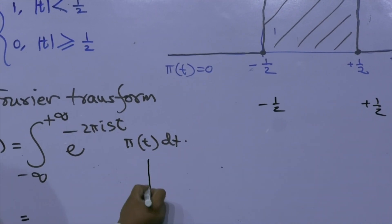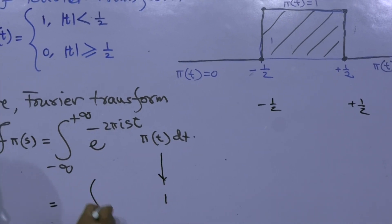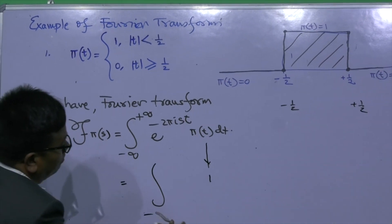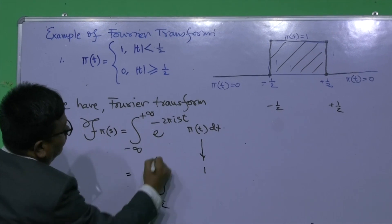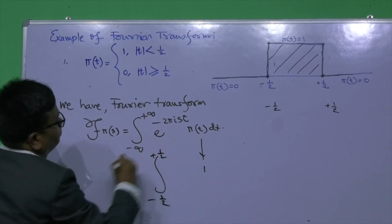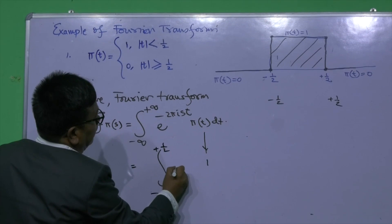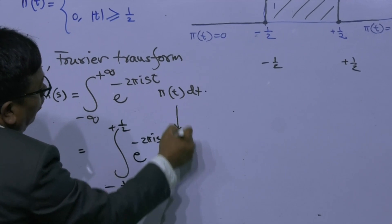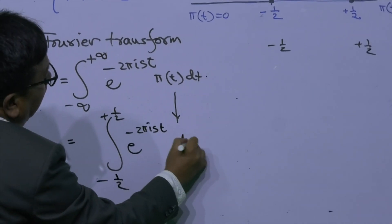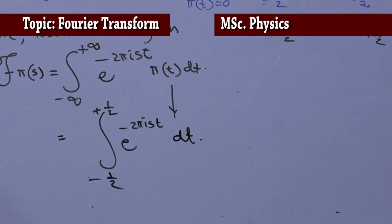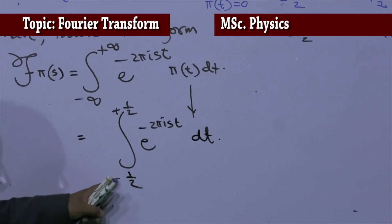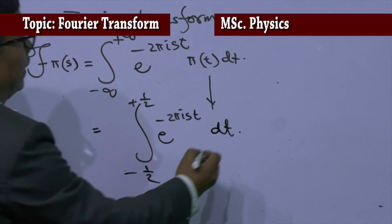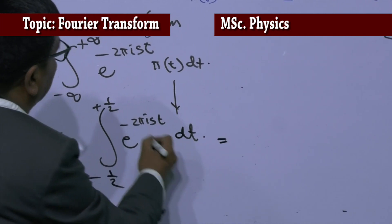So the function π(t) equals 1 only within those limits, and the integration limits reduce to minus one-half to plus one-half. The integral becomes the integration from minus one-half to plus one-half of e^(−2πist) dt, since π(t) equals 1 in that region. This integral is a standard form.